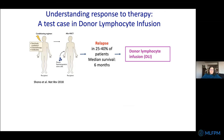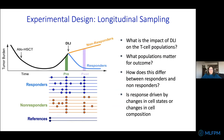We wanted to understand response to DLI — donor lymphocyte infusion. These are chronic myeloid leukemia patients who had a bone marrow transplant, things looked good for a while, and then they relapsed. One thing that sometimes works for these relapsed patients is to re-infuse them with lymphocytes from their donor. That sometimes helps and sometimes doesn't. We collected a pretty small cohort, but what was important is that it was high quality and longitudinal, and none of these patients had any prior therapy other than the same type of treatment history.